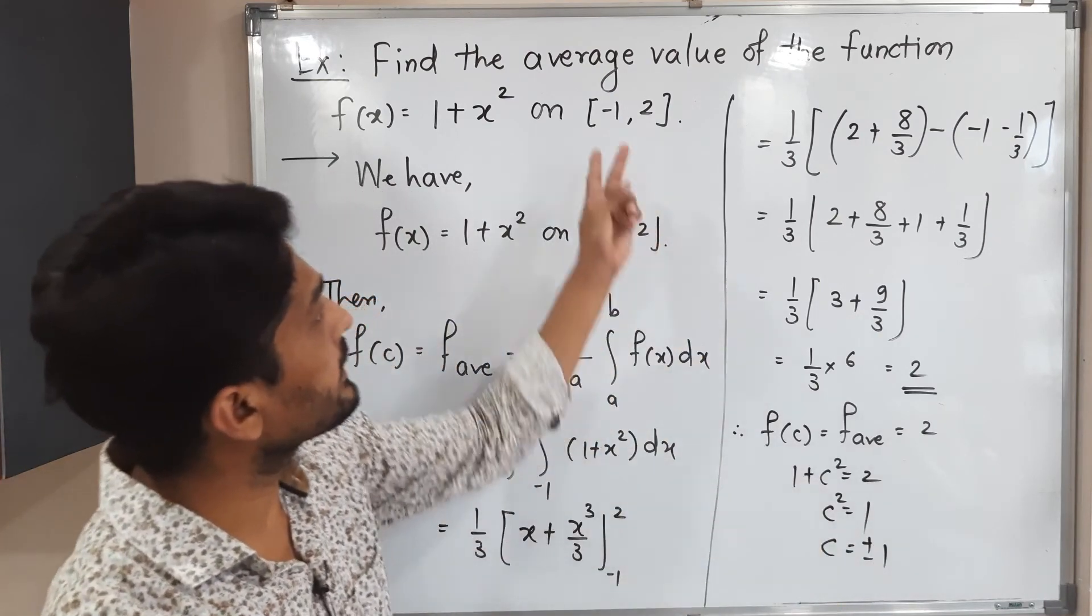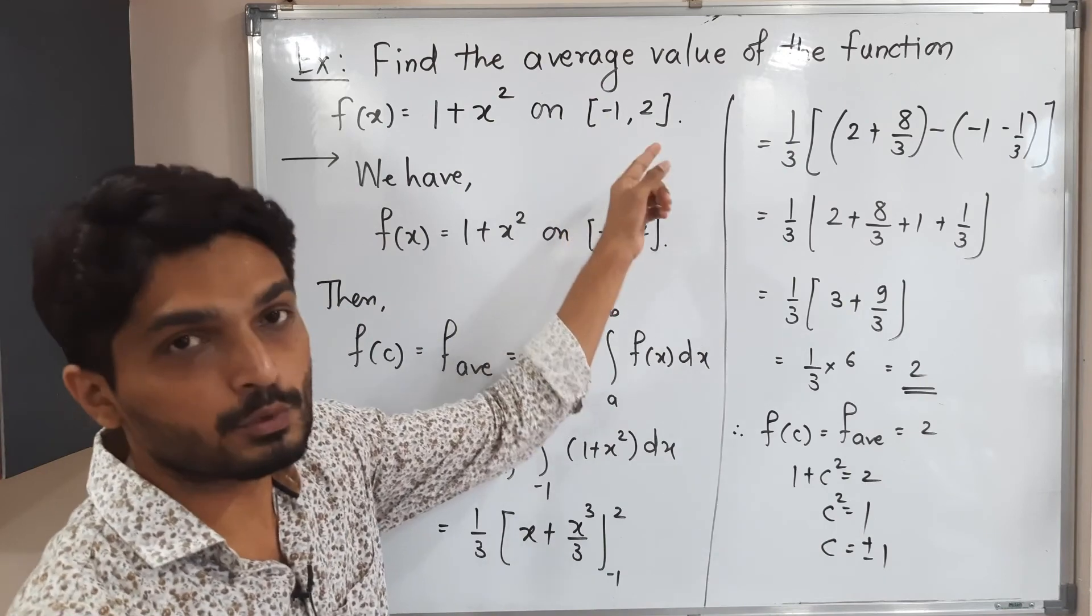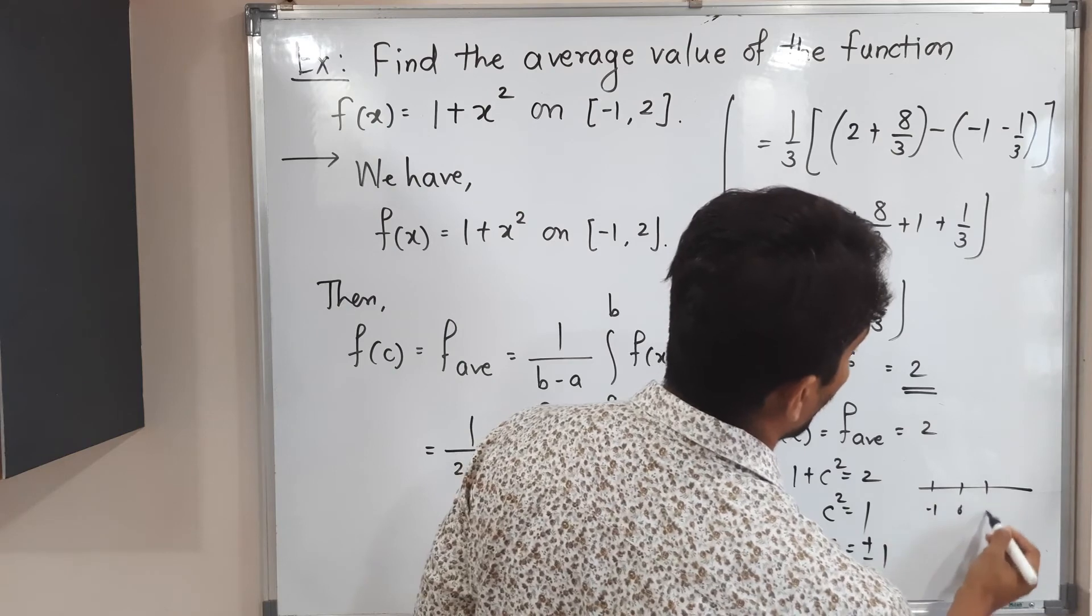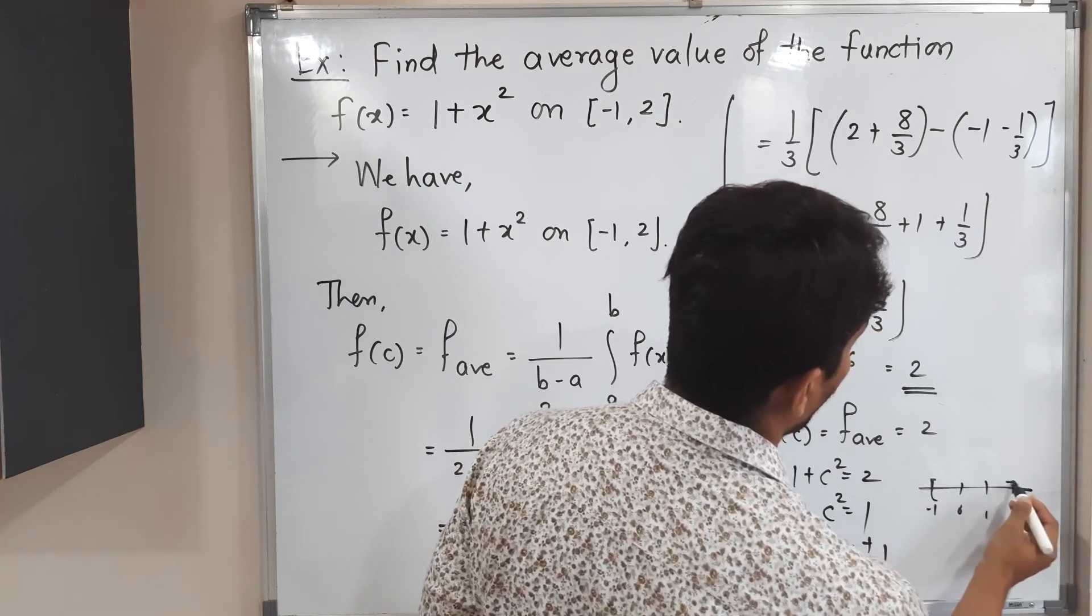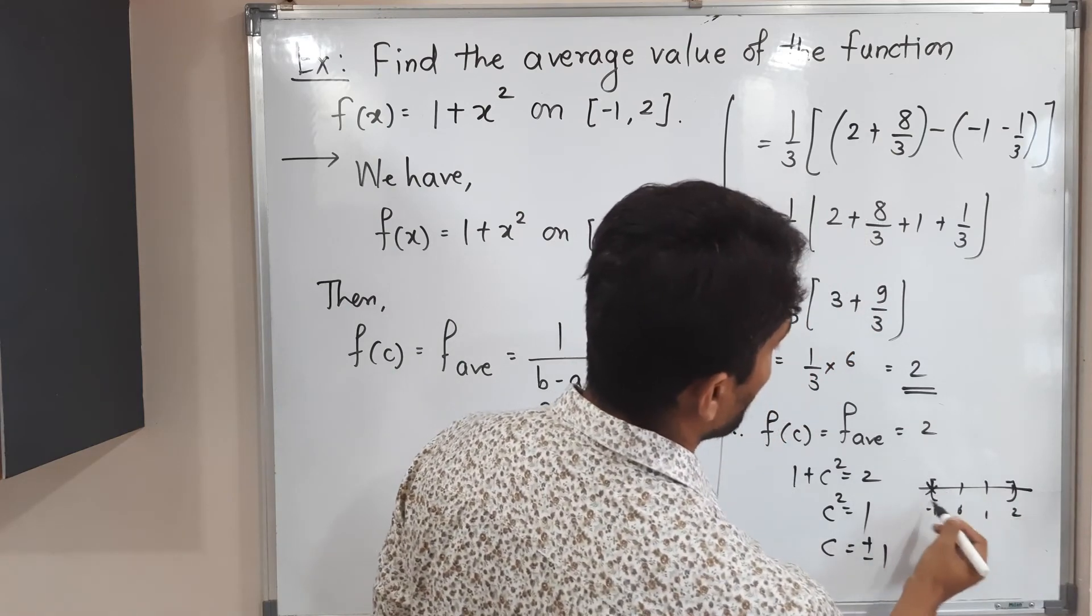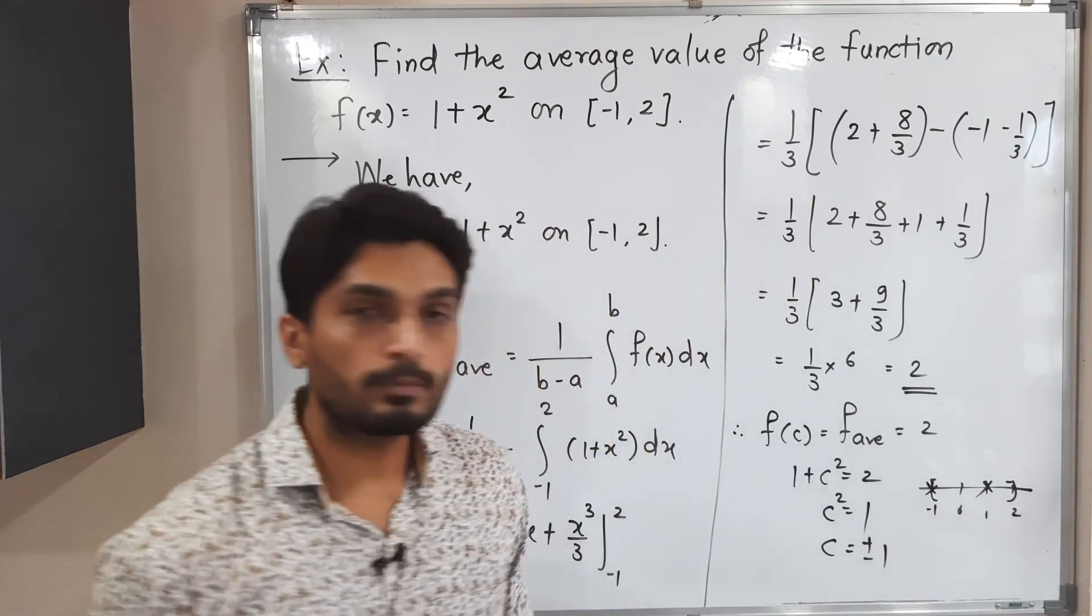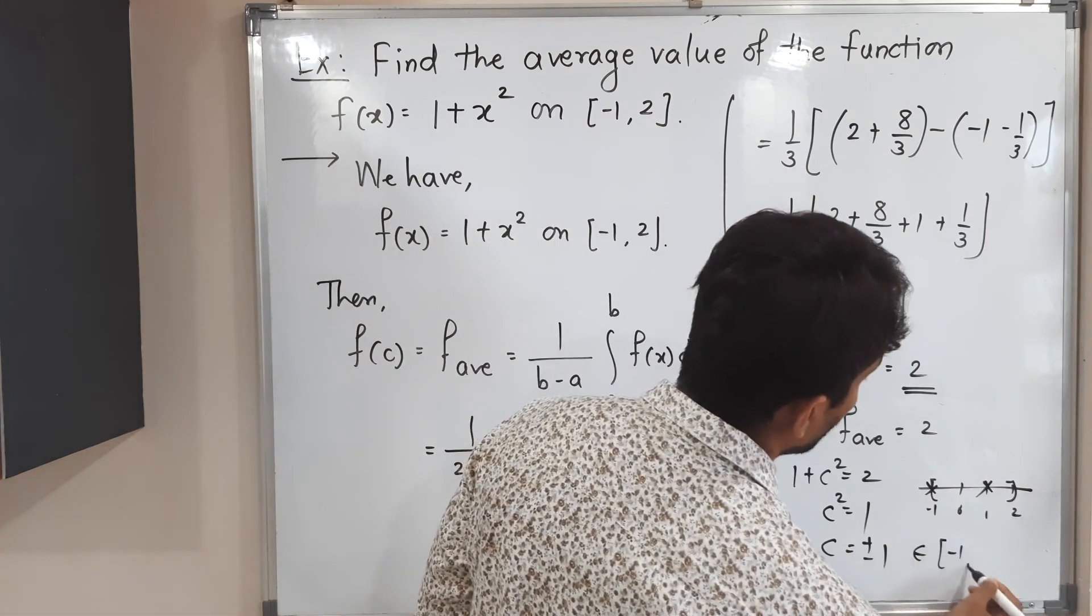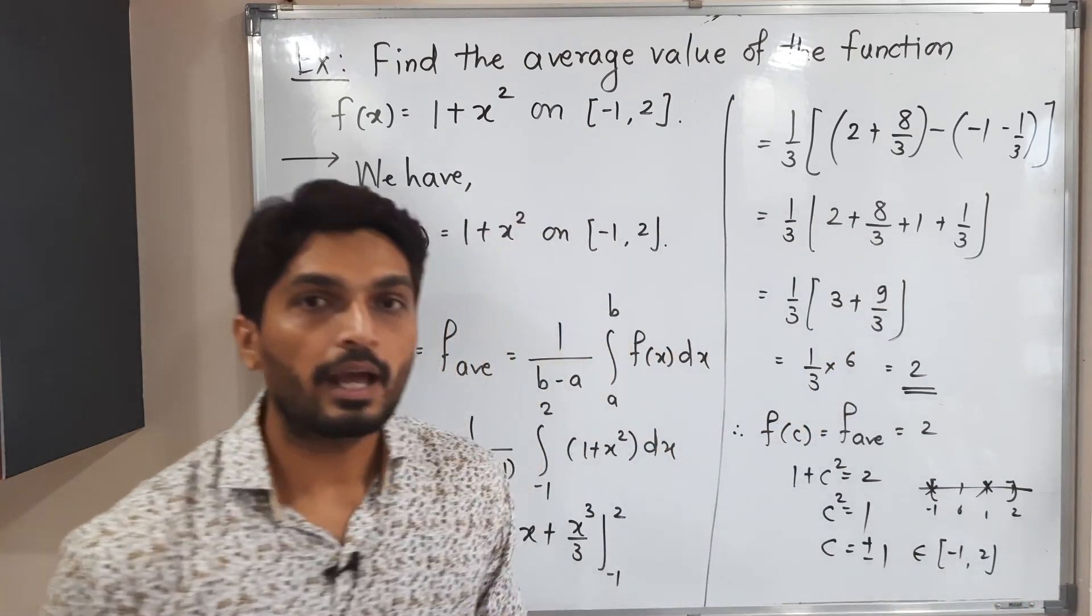Both points lie in this interval. We have the interval minus 1 comma 2. So minus 1, 0, 1, 2. So this interval we have. So first one point is minus 1 and second point is 1. So both points lie in this interval. That means there are two points where the function gets its average value.